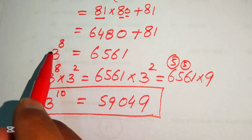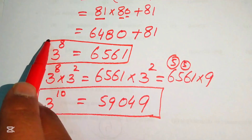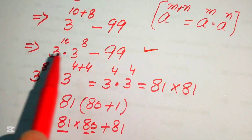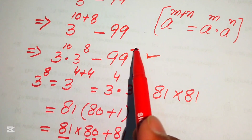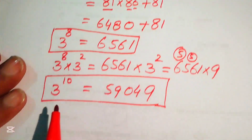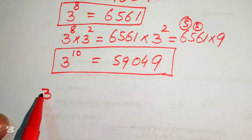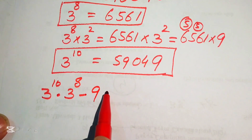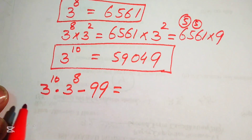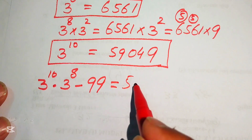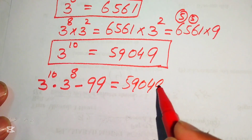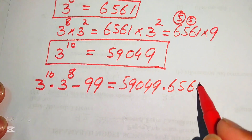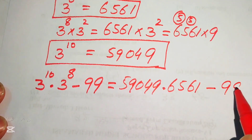Now we substitute 3 to the power of 10 and 3 to the power of 8 back into the expression: 3 to the power of 10 multiplied by 3 to the power of 8, minus 99, equals 59049 multiplied by 6561, minus 99.